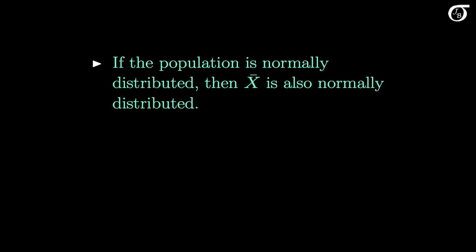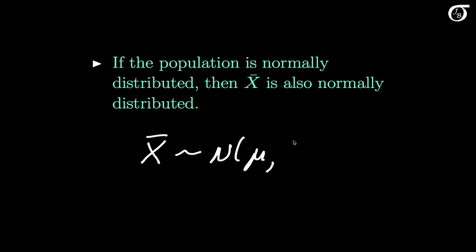If the population from which we are sampling is normally distributed, then X bar is also normally distributed. In summary, if we're sampling n observations from a normally distributed population, X bar is distributed normally with a mean of mu and a variance of sigma squared over n.